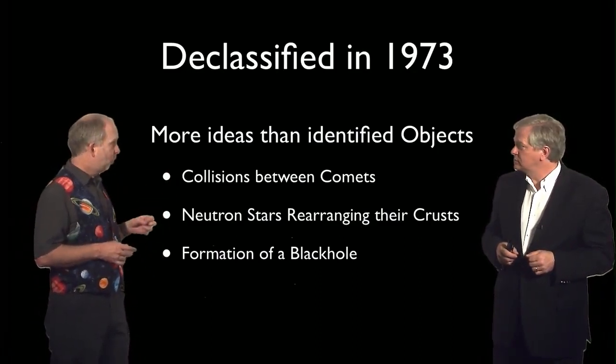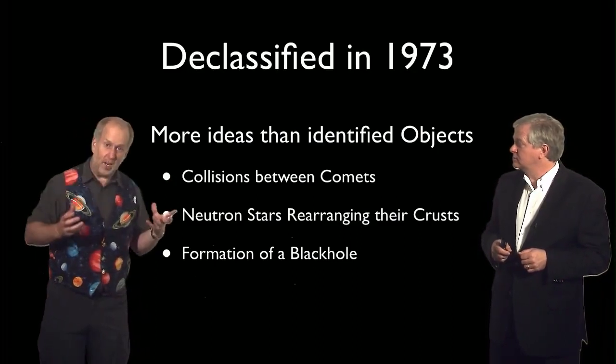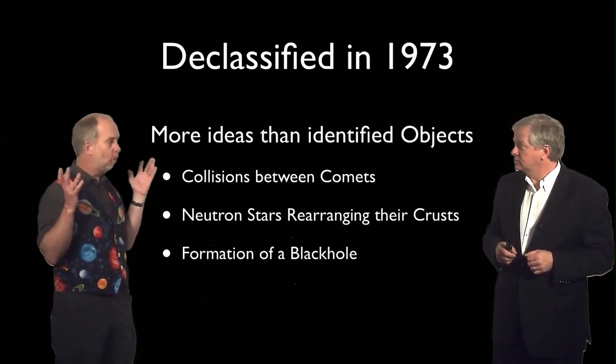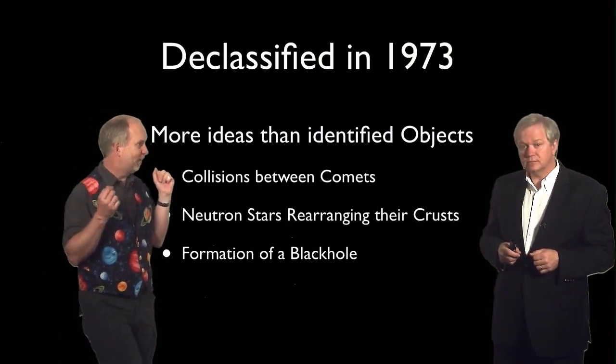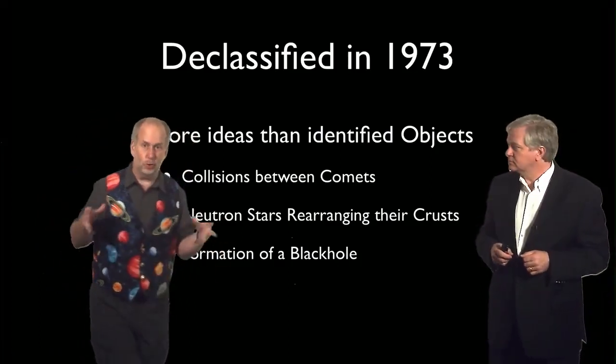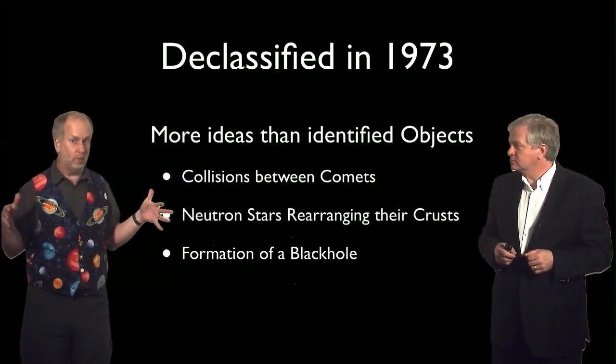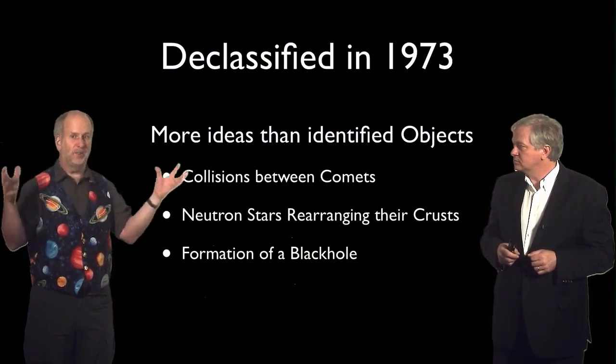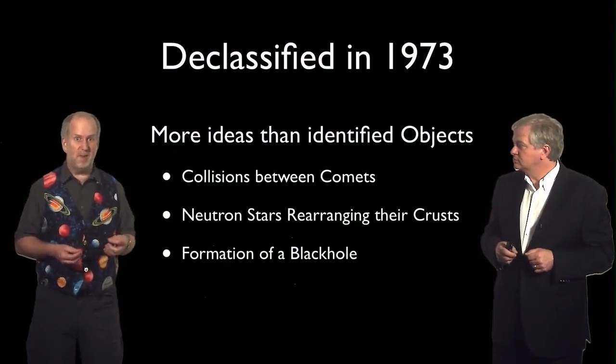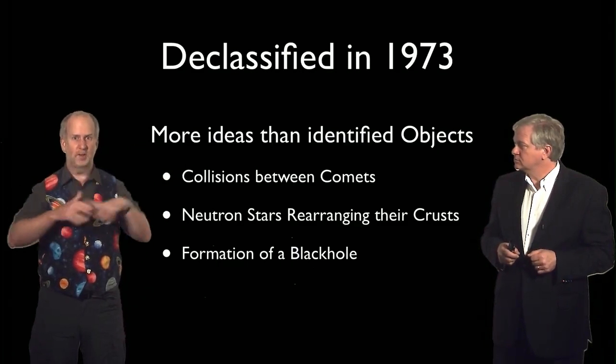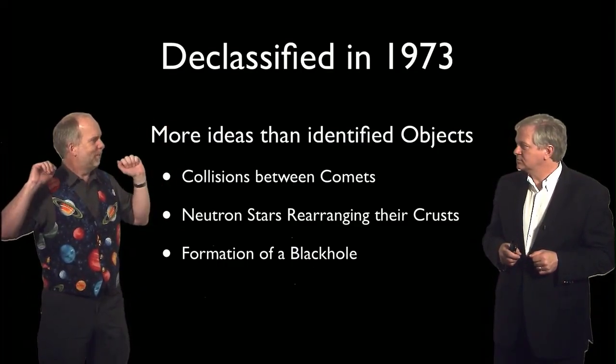One idea, for example, was that these things were coming from fairly nearby and it might actually be caused by collisions between, say, comets. We know planets don't collide on a regular basis in our solar system, but most of the comets in our solar system are out where we can't see them, what's called the Oort Cloud, a hypothetical shell of comets about half a light year out. And maybe some of the comets they were smashing into one another and, wave one's hands, producing gamma rays somehow.